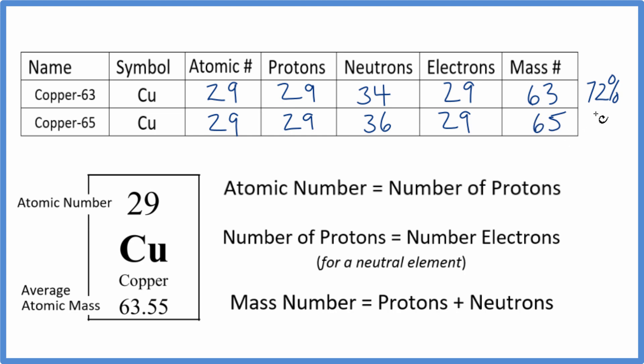Then about 17% or so would be this copper-65. If we averaged these together based on abundance, we'd end up with about 63.55. That's the average atomic mass.